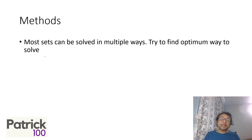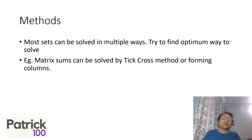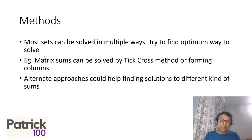Most DLR sets can be solved in multiple ways. It's important to find the optimum approach. For example, in matrix sums, the tick-cross method is common and given in books, but forming columns is much faster. The methods given in books may not always be optimal, so reformulate and improve your approach. For every sum you solve, try to find an alternate approach — it gives you flexibility in the exam. If one approach doesn't work, you can try the next. You may not find an alternate for every set, but the effort itself helps you improve.